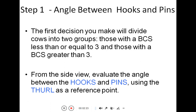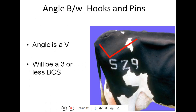Step one is evaluating the angle between hooks and pins. We classify animals into two main groups: scores equal to or below 3, and scores above 3. From the side view, we evaluate the angle between the hooks and pins using the thurl as a reference point. If the angle is V-shaped between the hook and pin, the score will be 3 or less than 3.